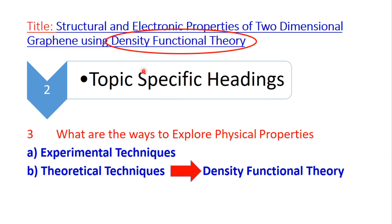Another topic-specific heading comes from the methodology used. In this title, one needs to calculate structural and electronic properties using Density Functional Theory, which is a theoretical technique. You can also write about available experimental techniques and then in detail about theoretical techniques. Both subheadings can fall under 'Ways to Explore Physical Properties,' a topic-specific heading.